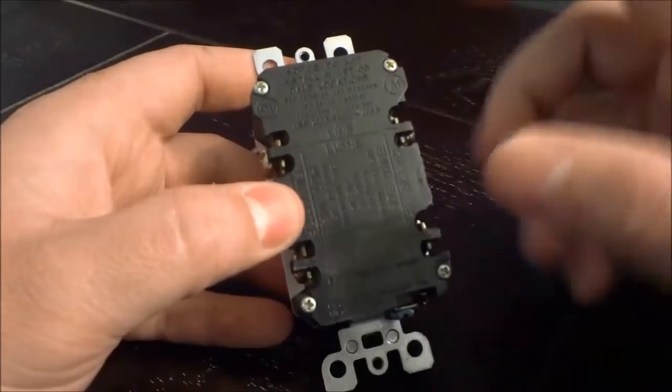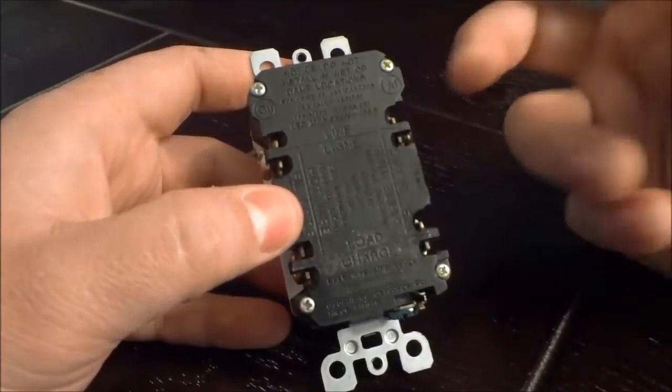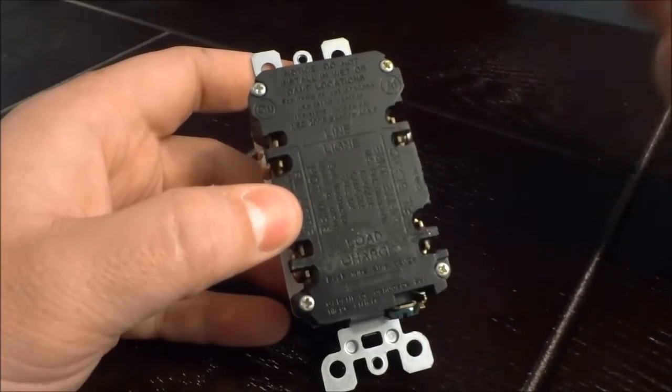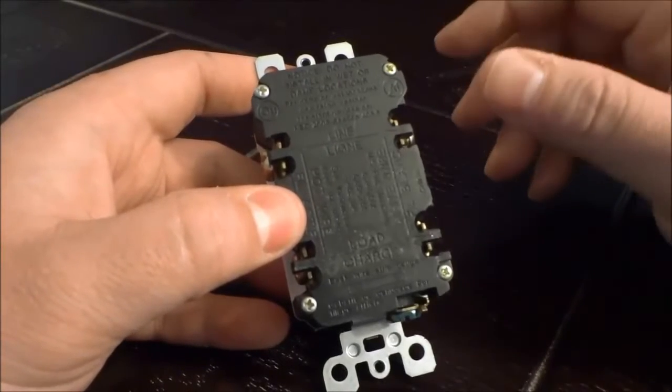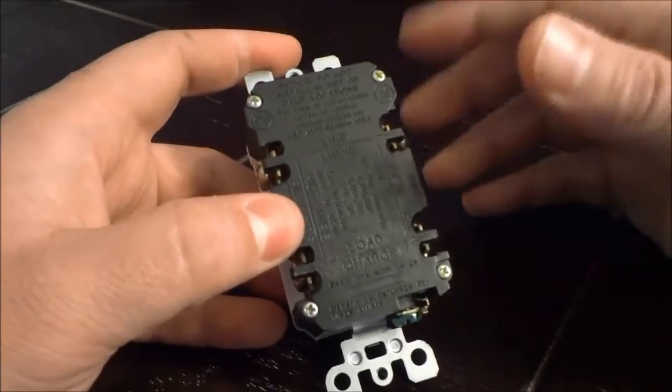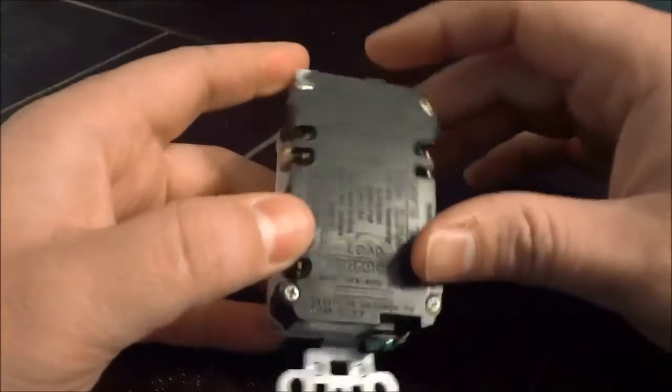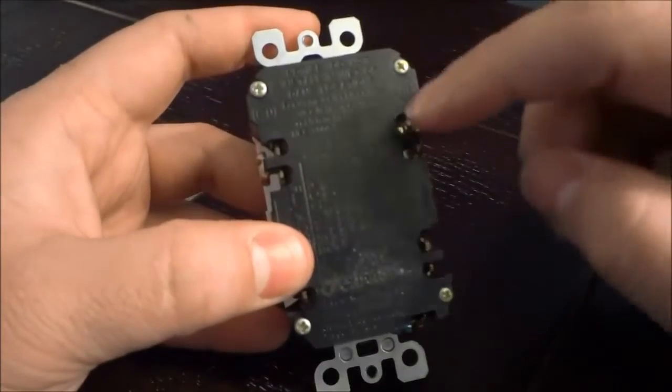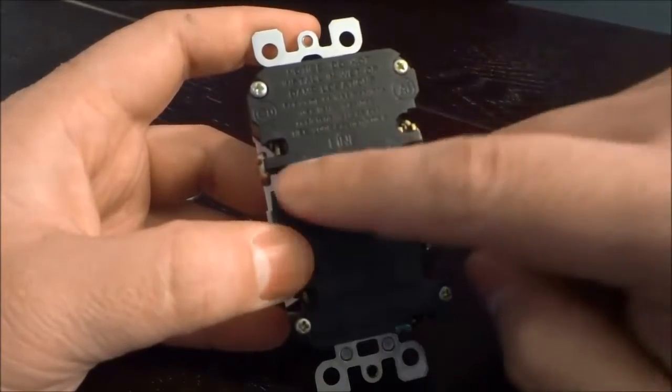Now the line is for the incoming power supply. So if you are wiring one of these up and you're getting power from your electrical panel, you would connect those electrical wires to the line side.